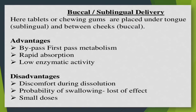For buccal and sublingual delivery, tablets or chewing gums are placed under the tongue (sublingual) and between the cheeks (buccal). Advantages: bypass first pass metabolism, rapid absorption, and low enzymatic activity. Disadvantages: discomfort during dissolution, probability of swallowing, loss of effect, and suitable only for small doses.